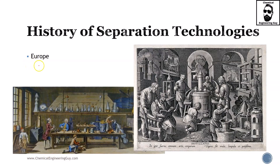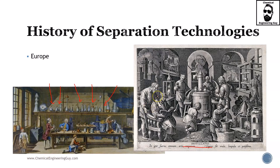Eventually Europe came into the picture. They applied many processes — most commonly distillation, extraction, maceration, and filtration — which were more formally added to scientific experimentation. A lot of glassware started to become relevant for chemists, and that's how they eventually started the formal education and analysis of separation technologies.